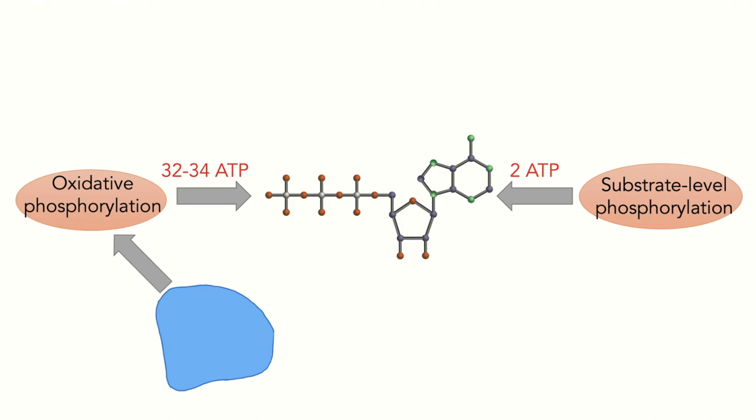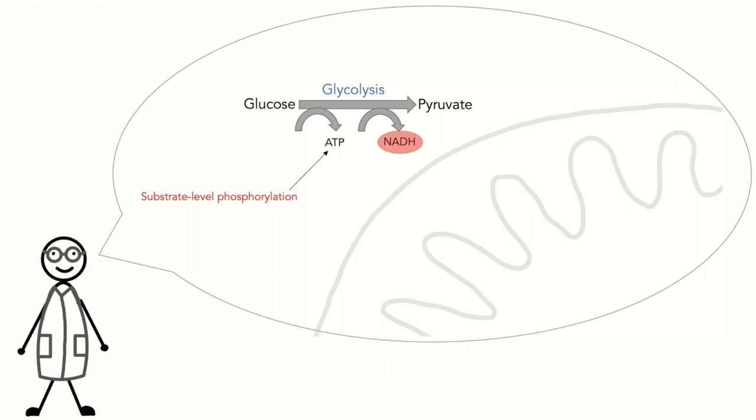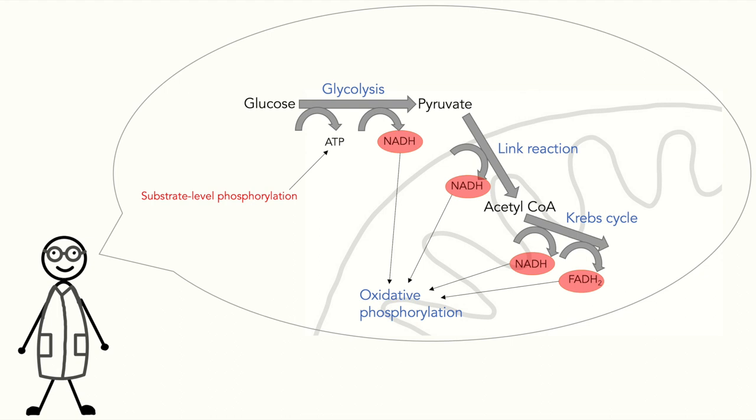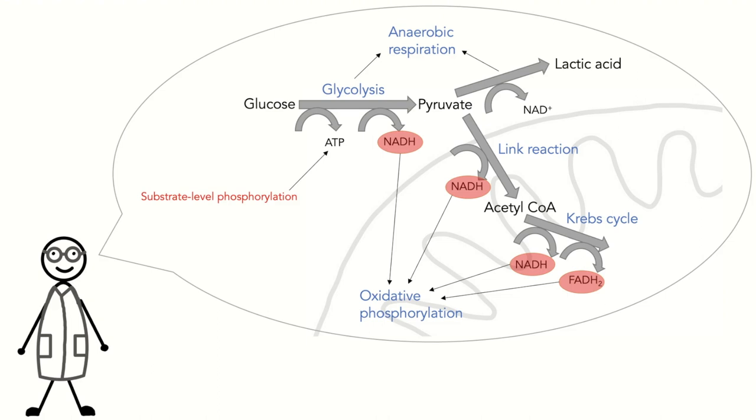Glycolysis cannot only be used as an upstream pathway for the Krebs cycle and oxidative phosphorylation, but can also be used to produce lactic acid, in a process called anaerobic respiration, hence can occur without oxygen.